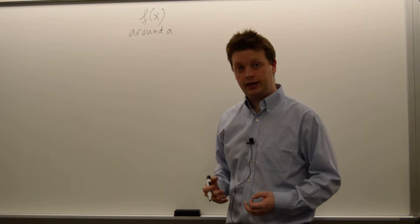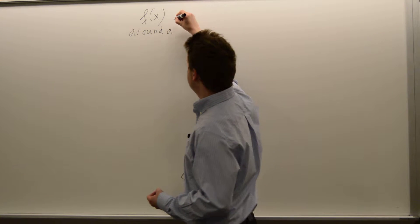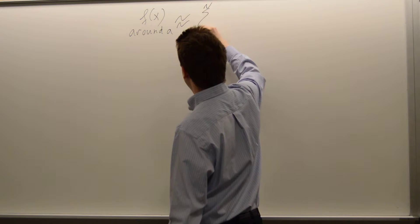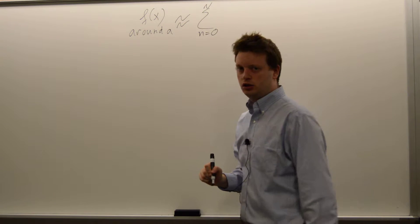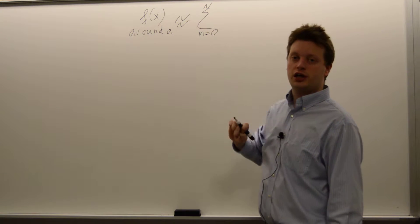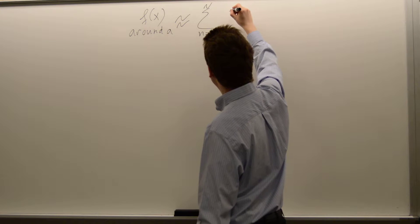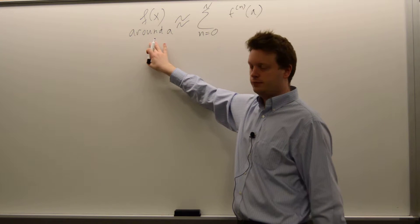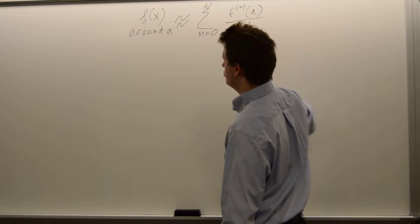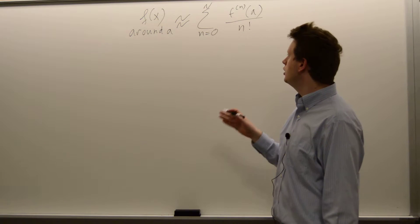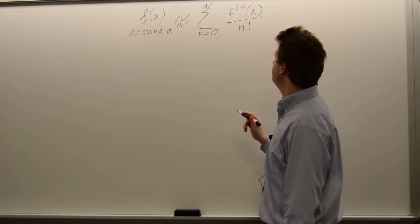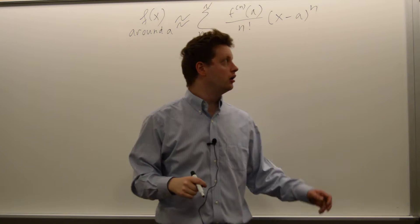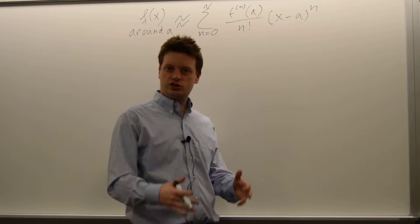If we approximate this function around a, then we have the general formula that this is approximately equal to the sum up to n, from little n equals 0. That will be the nth order Taylor approximation: f to the n at a — the point we chose — over n factorial, which is the product of all numbers from one up to n, times x minus a to the n. This is our general formula.